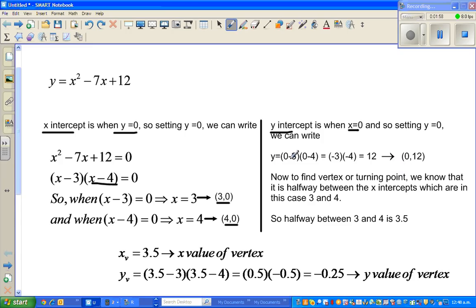I have put the value of x as 0 in this form, which is 0 minus 3 times 0 minus 4, which is negative 3 times negative 4, which is 12. So this is your y-intercept, which is (0,12), which we will confirm.